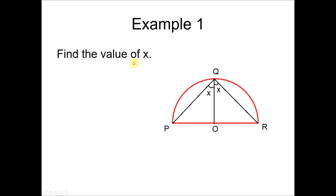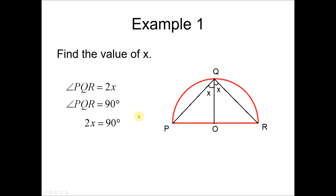Example number 1: find the values of x. We have a semicircle with center O, and two lines forming angle 2x subtended by the diameter. So angle PQR equals 2x equals 90 degrees. Therefore x equals 90 divided by 2, which is 45.